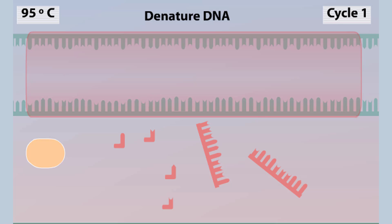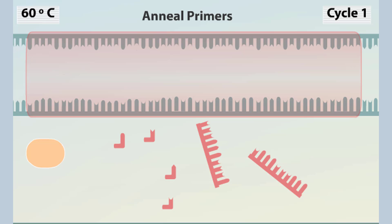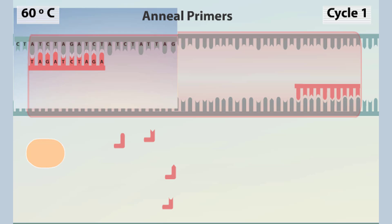After denaturing the DNA, the temperature is reduced to around 60 degrees so that the primers can form hydrogen bonds or anneal with their complementary sequences in the target DNA.